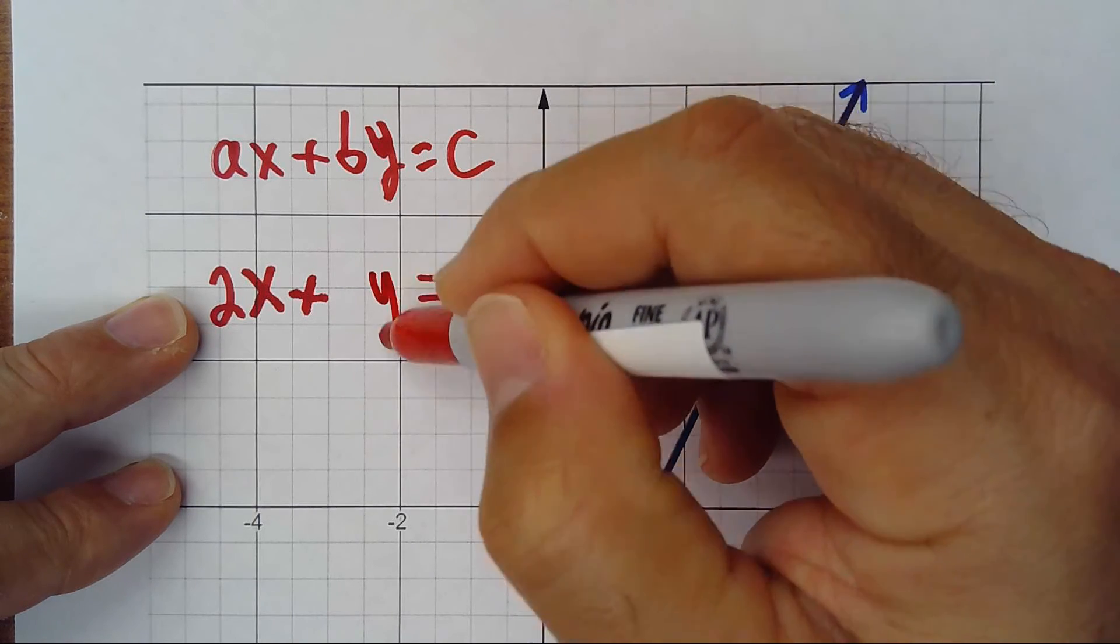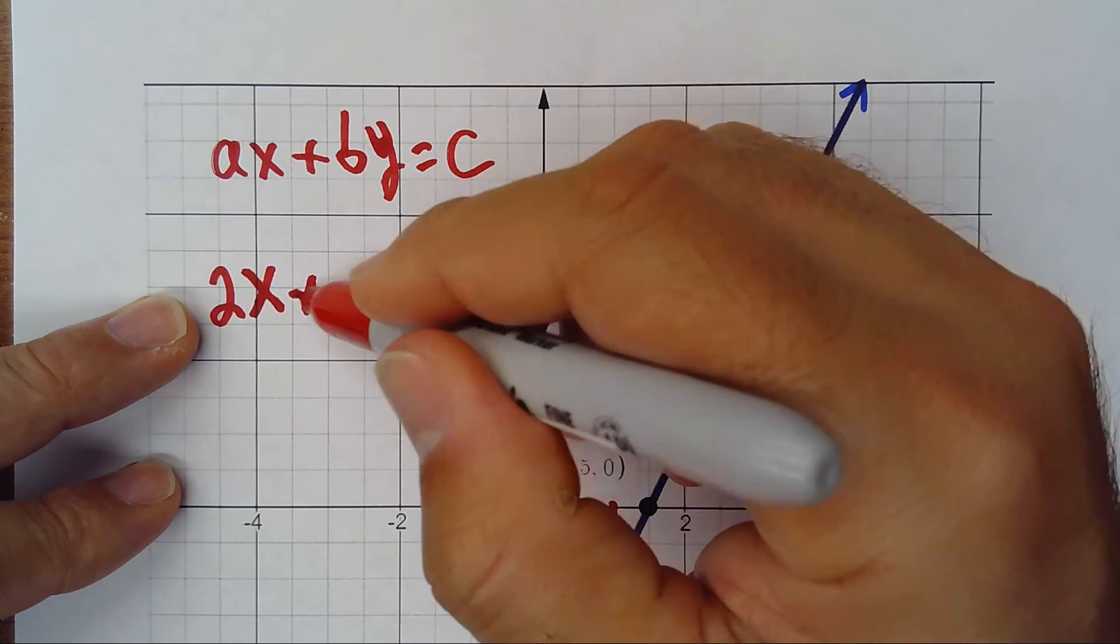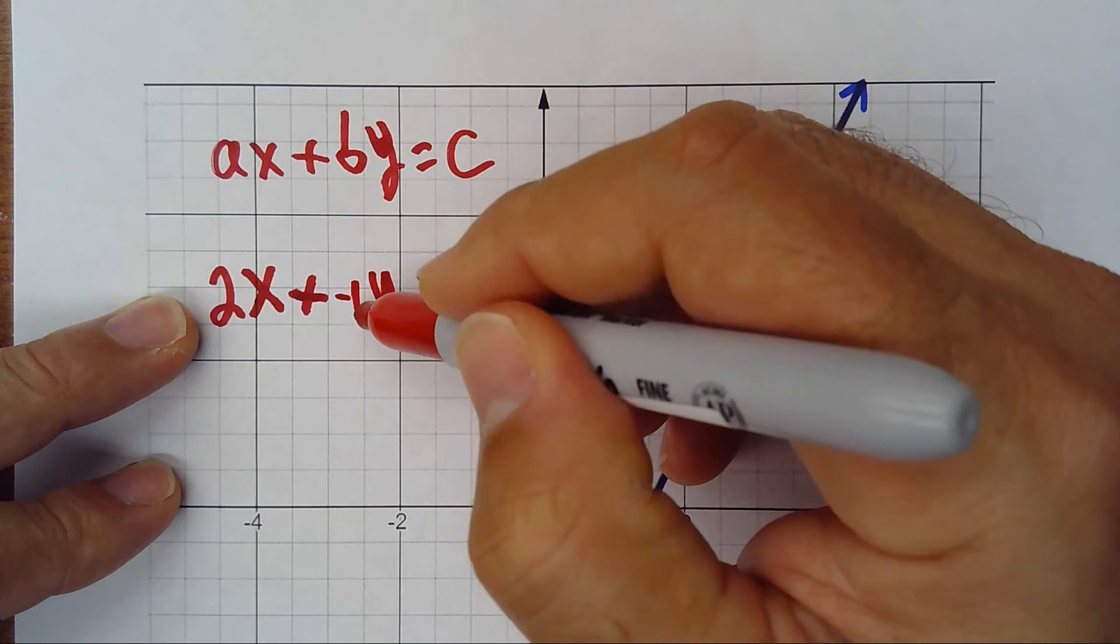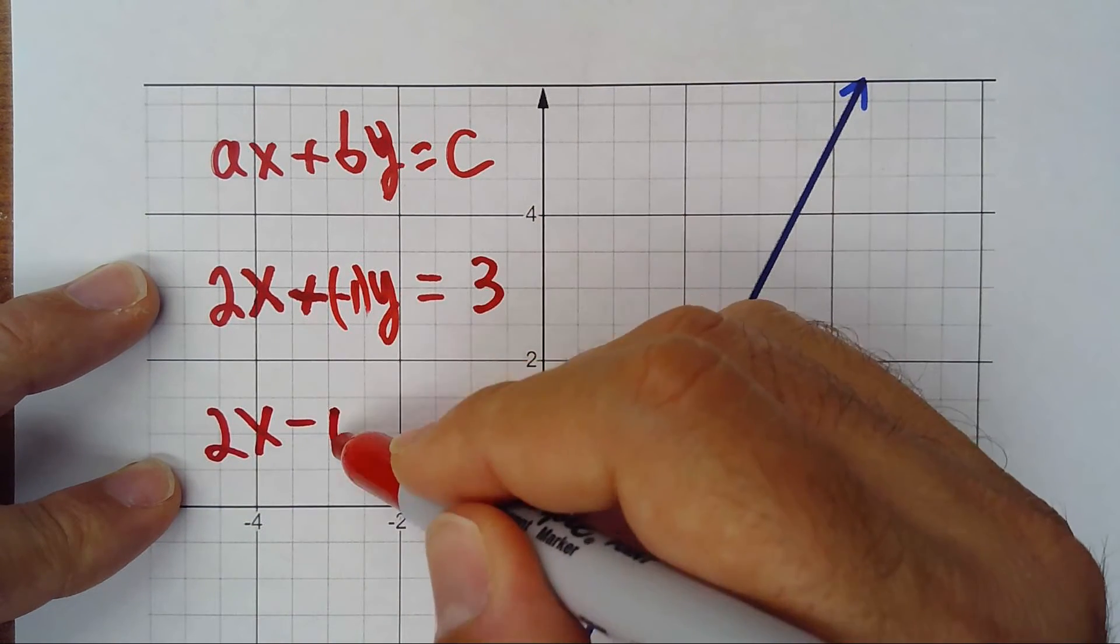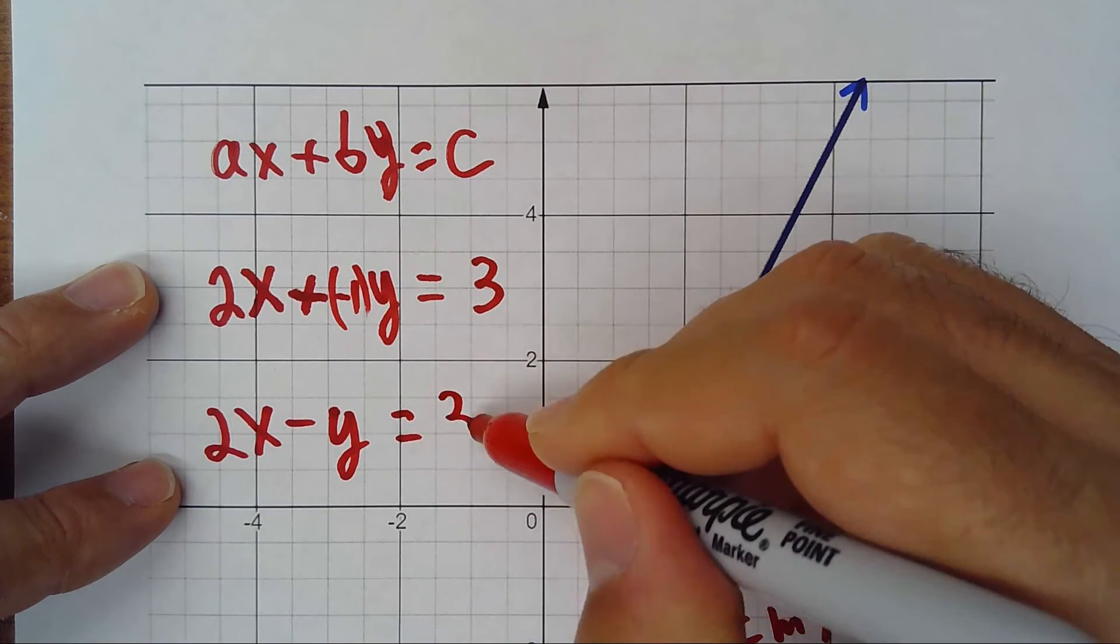Minus by, so instead of plus will be minus because this one will be -1. So 2x minus y equals 3.